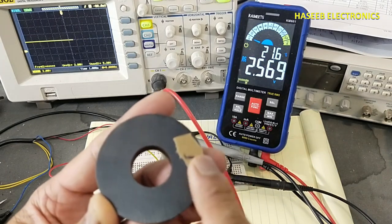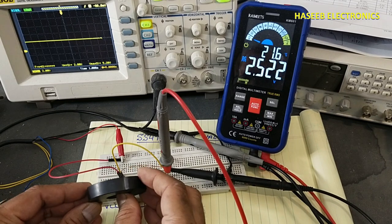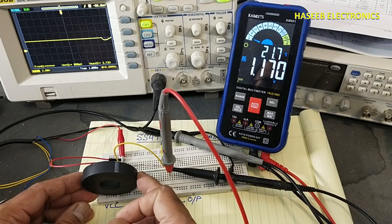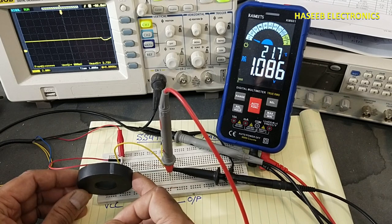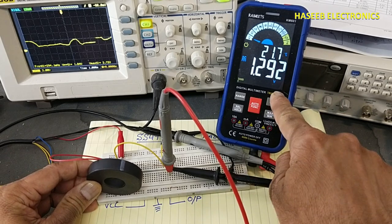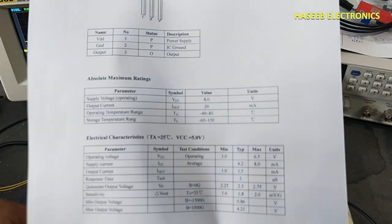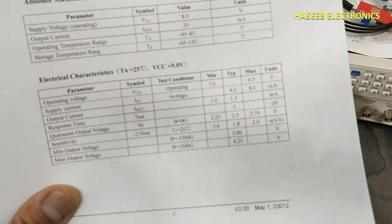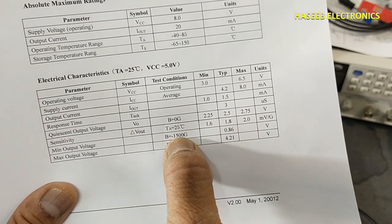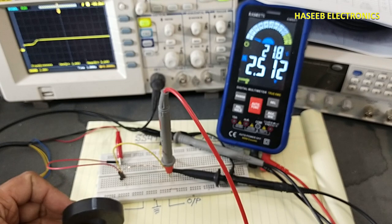Now I will bring north pole in front of this sensor. When north pole, we can see when north pole is coming closer to the sensor, the voltage is decreasing.